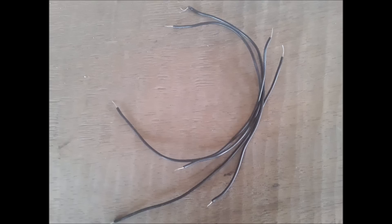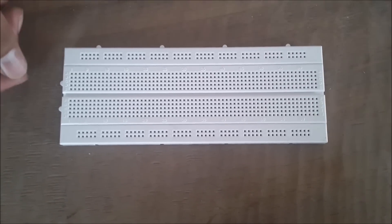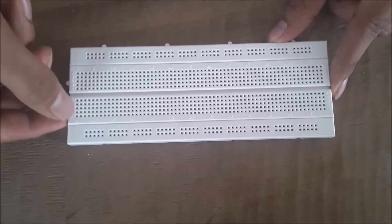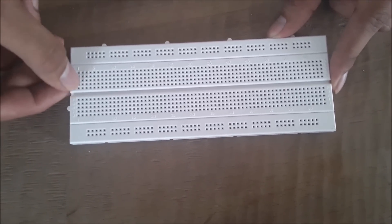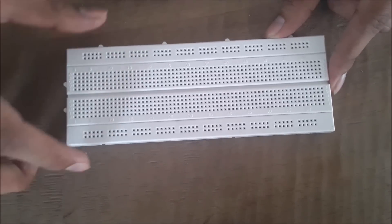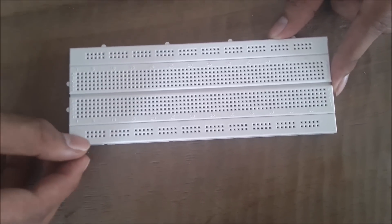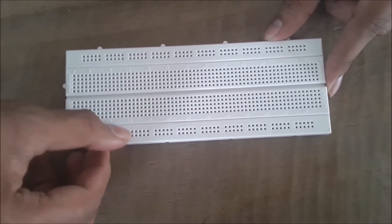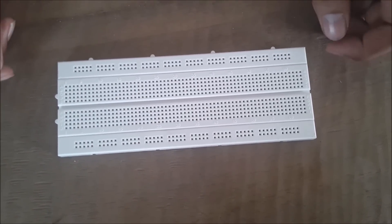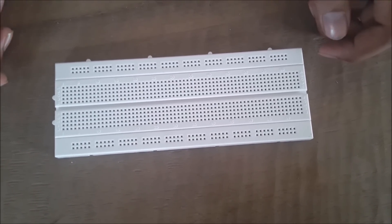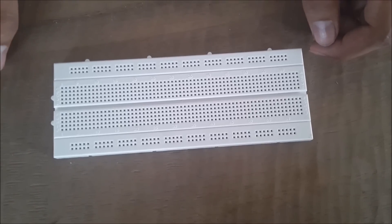And some jumper wires. In the breadboard you can see these columns are all in series, and here in the two ends this is in series and at this end it is also similar. So now I am going to put the components in the breadboard as per the schematic diagram.